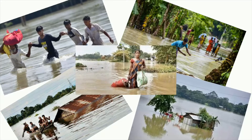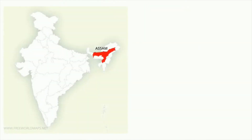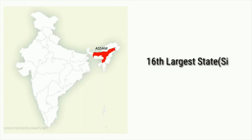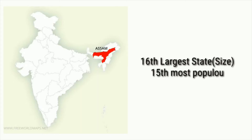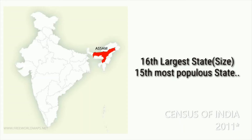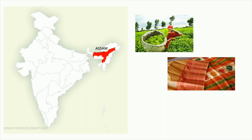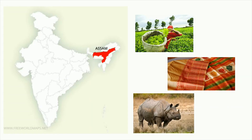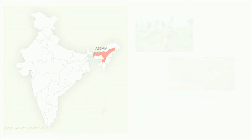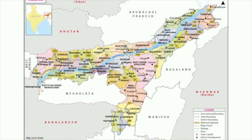Let's quickly take a look at Assam and the Brahmaputra river. Assam is a state in Northeast India which is the 16th largest state of India on the basis of area and the 15th most populous state of India according to the Census of India 2011. Assam is famous for its tea plantations, Assam silk, and the one-horned rhinoceros found in Kaziranga National Park. There are in total 33 districts in the state of Assam.